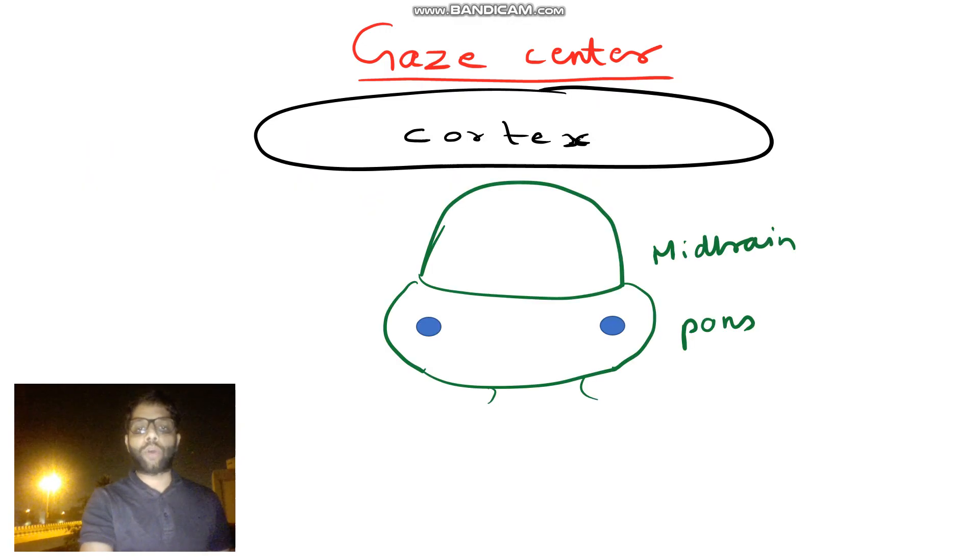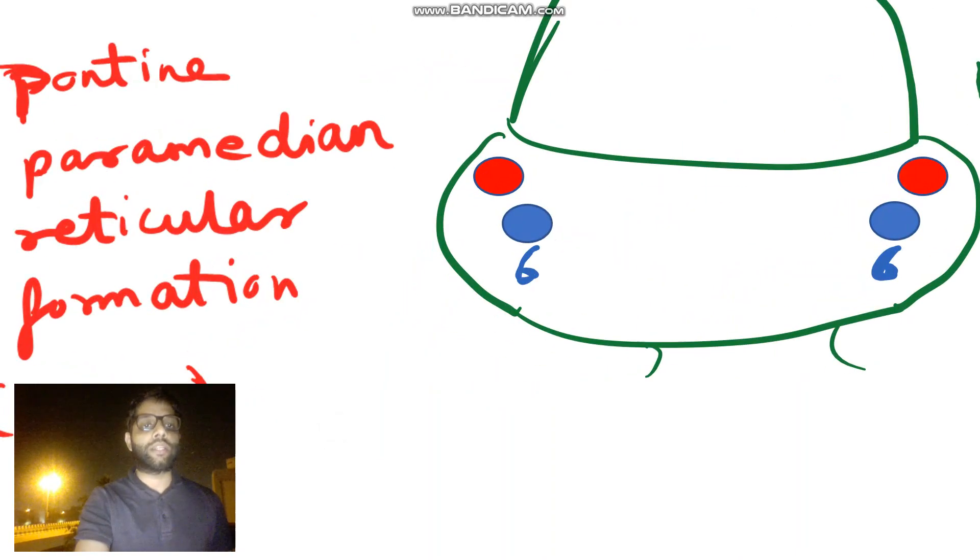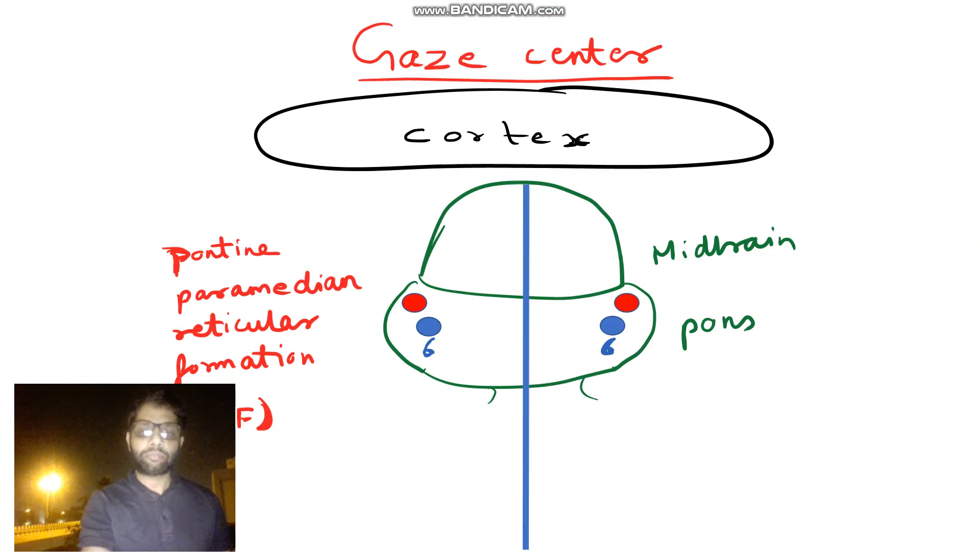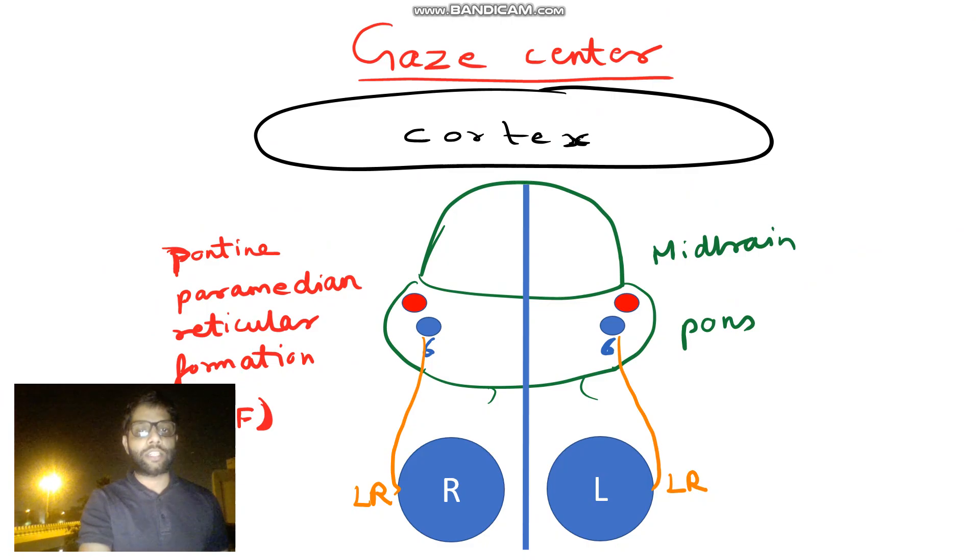So we have this cortex, midbrain, pons and we have this 6 nerve nucleus at the level of pons. Along with 6 nerve, we have this PPRF, that is pontine perimedian reticular formation known as PPRF. So what happens is the impulse, 6 nerve gives impulses to lateral rectus of the same side. But you want to know that the impulse is generated in the PPRF. Some people say the impulse generated in PPRF goes to 6 nerve, some say from 6 nerve to PPRF. Point to be noted is, this PPRF and 6 nerve are the 6 nerve nuclear complex, which are involved in horizontal gazes.